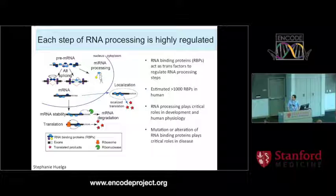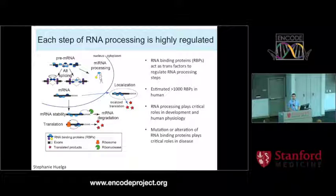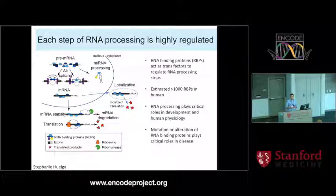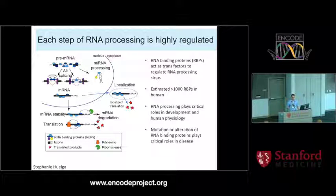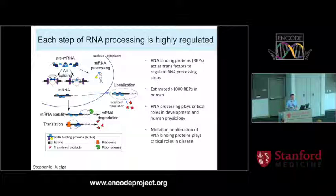Every aspect of RNA processing is very highly regulated. That includes things that change the sequence of the RNA - RNA splicing changes the sequence that ultimately gets translated into a protein - but also the export of RNAs from the nucleus, localization to specific organelles or to axons in neurons, the stability of RNAs and how quickly they're turned over, and even the rate and initiation of translation are all controlled by RNA binding proteins. In the same way transcription factors bind DNA through sequence motifs, RNA binding proteins bind RNA through primary or structural motifs and regulate these different steps.